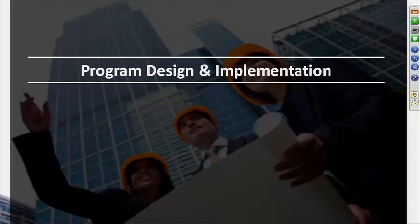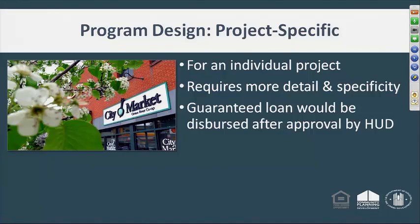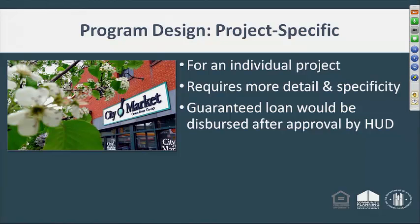I'd like to talk about the program design and implementation of Section 108 projects. Basically, we get applications that have either a specific project identified and the design focuses on that individual project. The application has to provide the detail and specificity needed to determine whether the project is eligible, meets national objectives requirements, and whether it will meet our underwriting standards. After we approve an application, the guaranteed loan would be disbursed for that particular project as a borrower needs those funds.